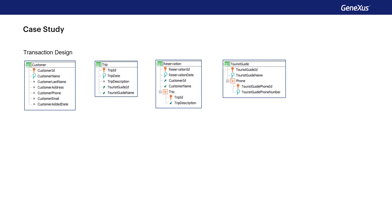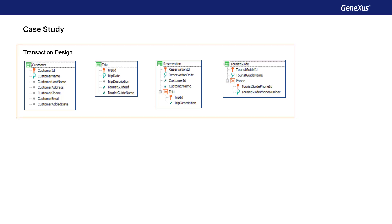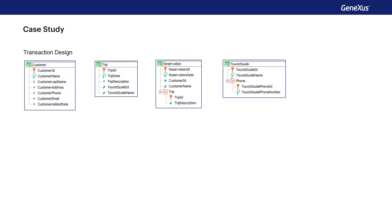In a previous video, we analyzed a case study to determine how GeneXus applies filters when they're received as an attribute in the PARM rule. Going back to that same case, we'll see how to prevent that filter from being applied. We then start from the design of transactions that's displayed, and we needed to obtain a list showing, for a given client and from a given date, all the tours he's booked.